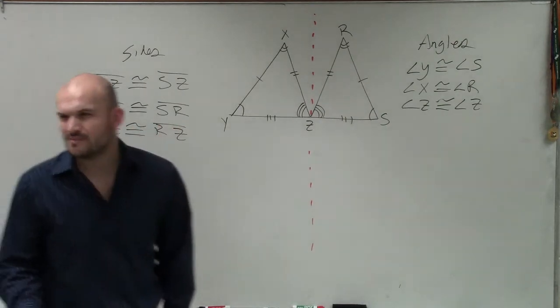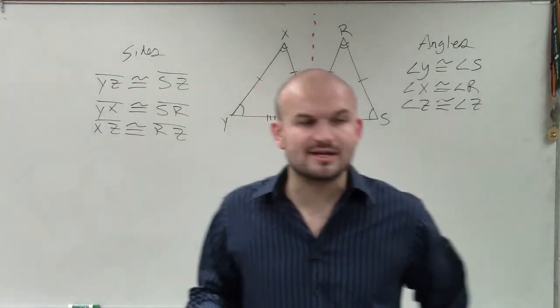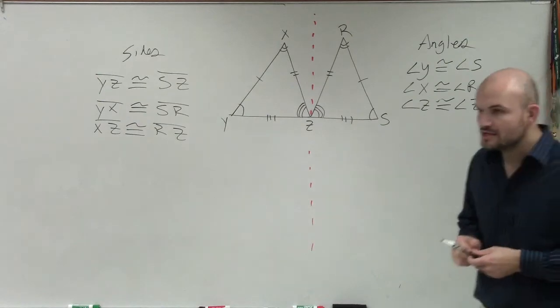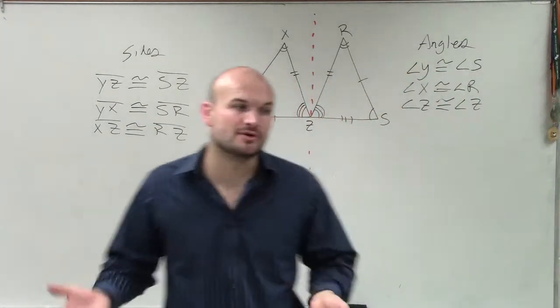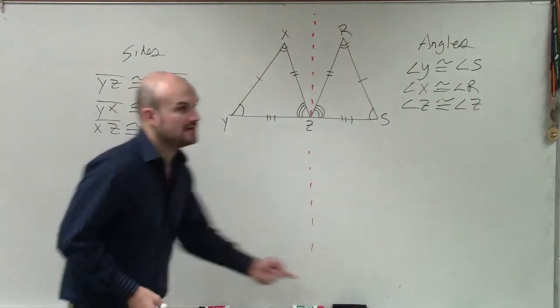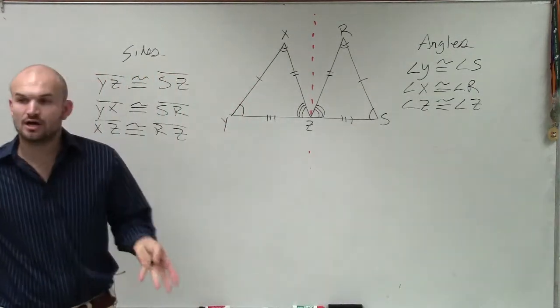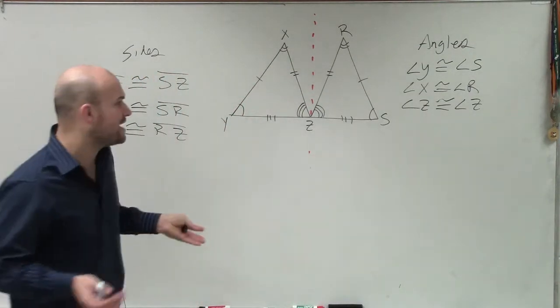So it really doesn't matter which direction you go, as long as you're consistent with going in the same directions for both triangles. So now that I understand that I have congruent angles and congruent sides, I can write a congruency statement. And again, yours might be a little bit different from mine. But as long as you're going in the same order for both triangles, that's OK.